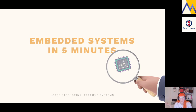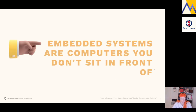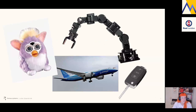Because we cannot presume that everyone in the audience is an embedded developer already, we've prepared a tiny primer before our actual talks on what embedded systems are and how we program them. In the words of my colleague James Munns: embedded systems are computers you don't sit in front of. That can be anything from little furry toys to industrial robot arms to a car key fob, and also the entertainment and control systems of a plane.